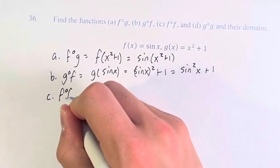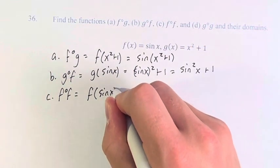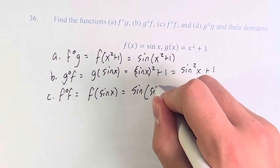C, f of f. This is f of itself, sine of x. So this is the sine of the sine of x.